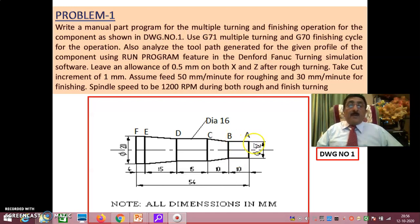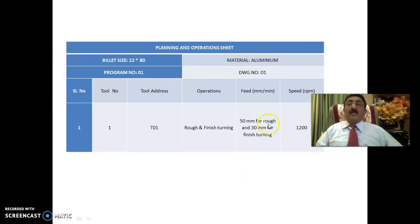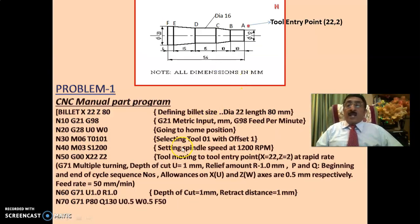During finishing, the 13 mm will be removed to 12 mm. In the same way, if it is 20 mm here, it will actually be 21 mm with 0.5 allowance on each side, and during finishing that 0.5 will be removed so that the diameter becomes 20 mm. So if the depth of cut is 0.5 mm, the diametrical reduction will be 1 mm. During rough turning the depth of cut is 1 mm, and feed is 50 mm per minute during roughing and 30 mm per minute for finishing. I have already given the program. This is the planning and operation sheet where you have only two operations: rough and finish turning.